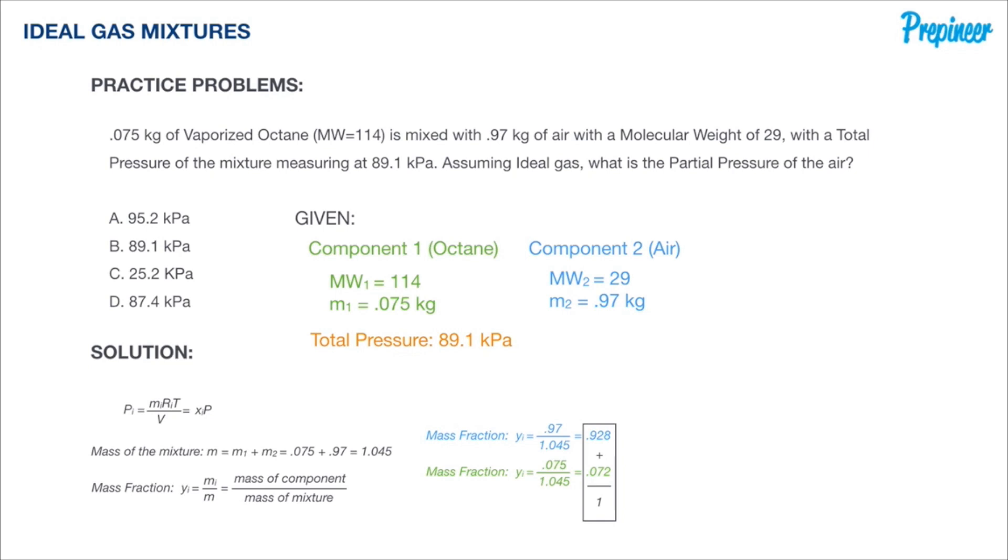So what we're going to actually do is take this mass fraction and we're going to convert it to the mole fraction. The formula is stated on your screen. We have the molecular weights for each of the components within the mixture, so all we need to really do from this point is plug and play. Doing that, we get a mole fraction for air of 0.981.